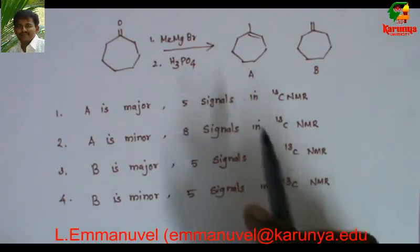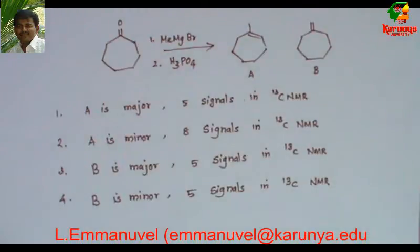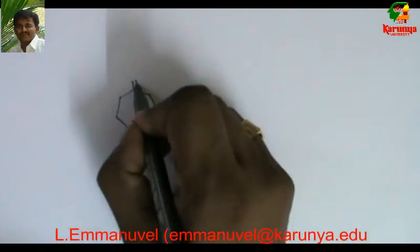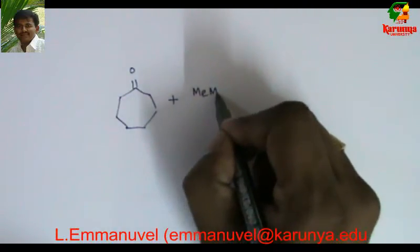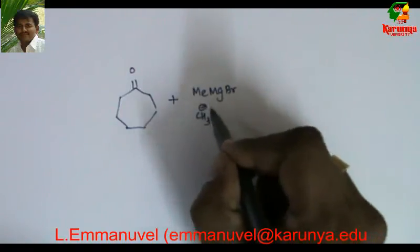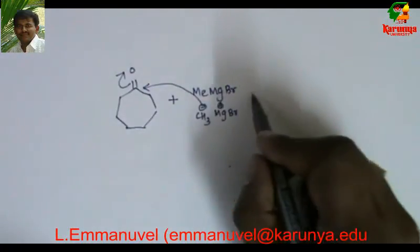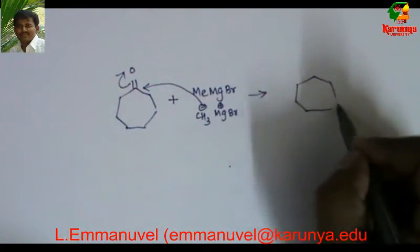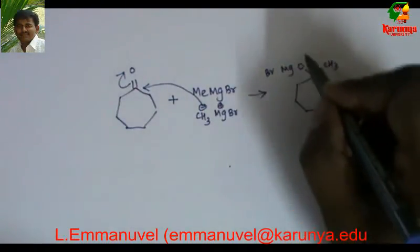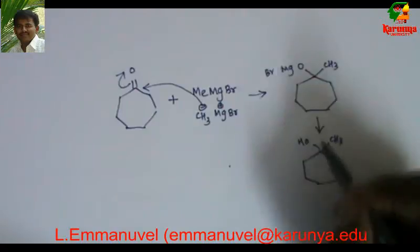In the first part, we have to predict which one will be major and which one will be minor. The second part deals with the number of signals in the C-13 NMR of that compound. To solve this, we should first know the Grignard reaction between this ketone and methyl magnesium bromide. In methyl magnesium bromide, the methyl group has a negative charge, so it can act as a nucleophile and attack the ketone to give an intermediate, which during workup takes a proton to give a tertiary alcohol.